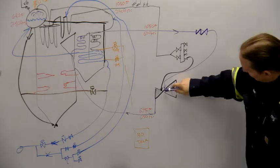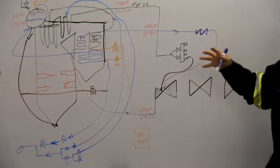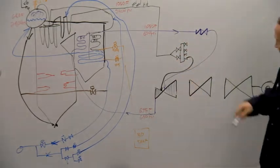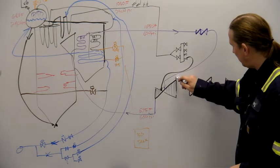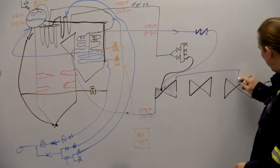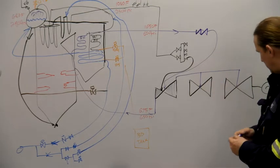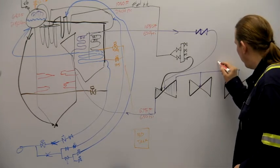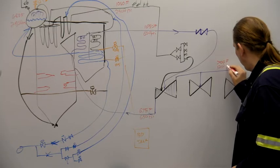So steam goes in, it expands, it gives up pressure, it loses pressure, it loses heat, it turns that energy into the shaft. And then we exhaust out the intermediate pressure turbine, then we go to the two low pressure turbines. And so here we are 700 degrees and 120 pounds.